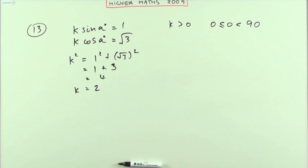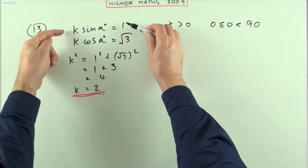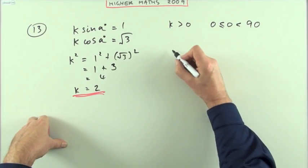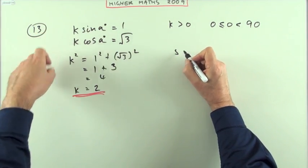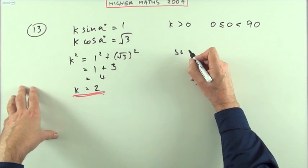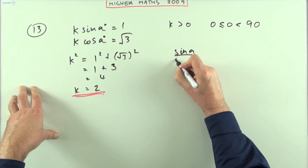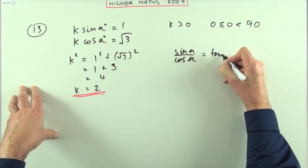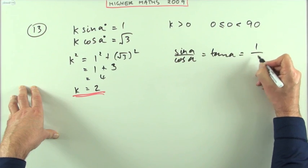For the second part, now that I know what k is, you could substitute that back in, but usually what you do is divide the two equations. Dividing them would knock out the k's and leave you sin a / cos a, and sin a / cos a is tan a.